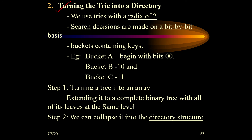The second step is turning the tree into a directory. Here we are considering only two-bit radix, meaning the tree is processed bit by bit. The buckets actually save the keys. We will see how this is done with an example using three buckets: A, B, and C, with radix 2, giving us addresses 00, 10, and 11. Bucket A is stored at 00, B at 10, and C at 11.